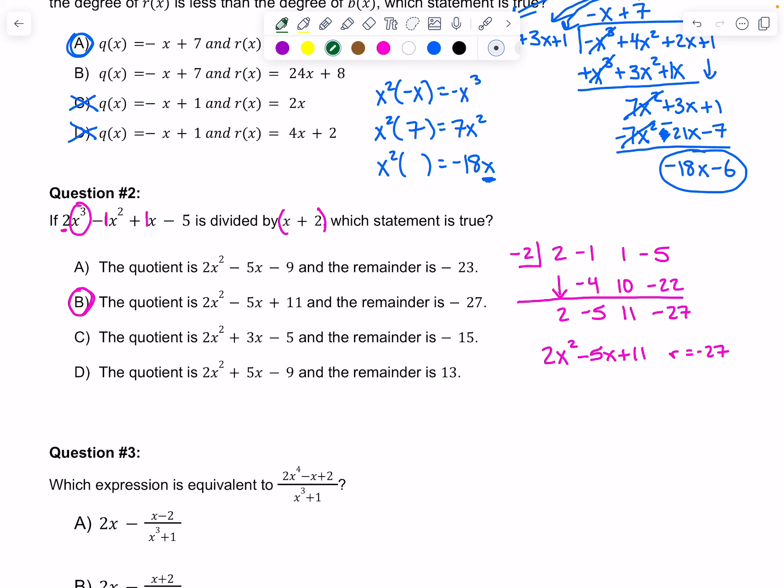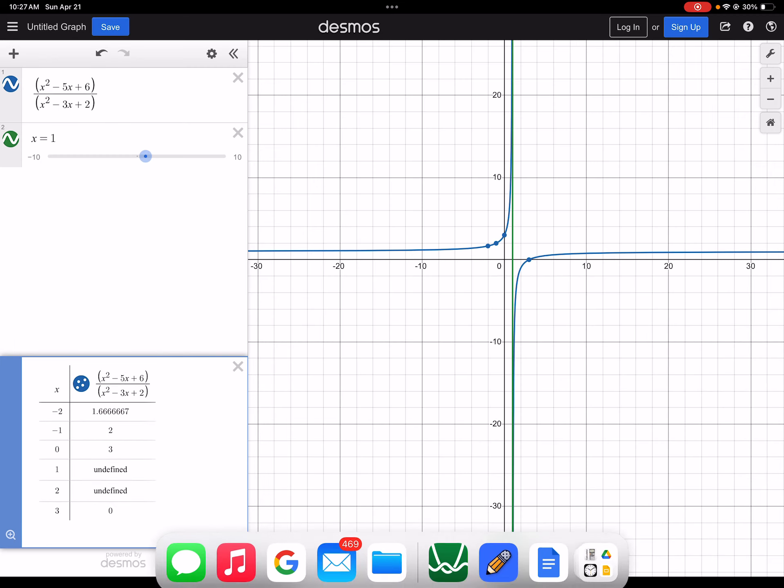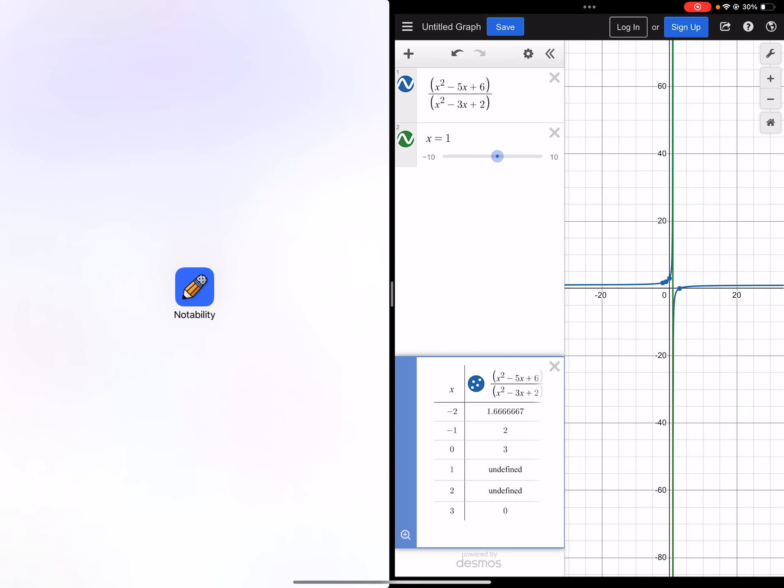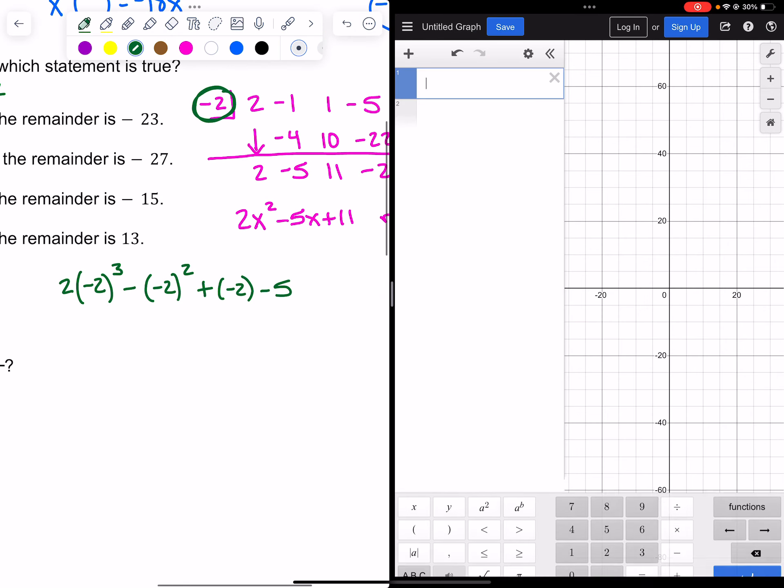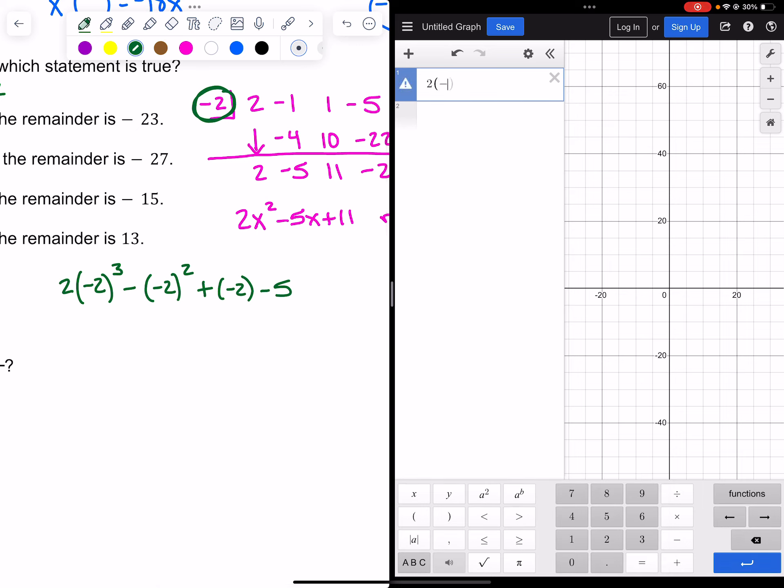Synthetic substitution is to take the root, change that sign to negative 2, and plug it into the function. So I'm going to say 2 times negative 2 cubed minus negative 2 squared plus negative 2 minus 5. Let's pull up Desmos and have it help us finish. Substitute carefully and use parentheses.